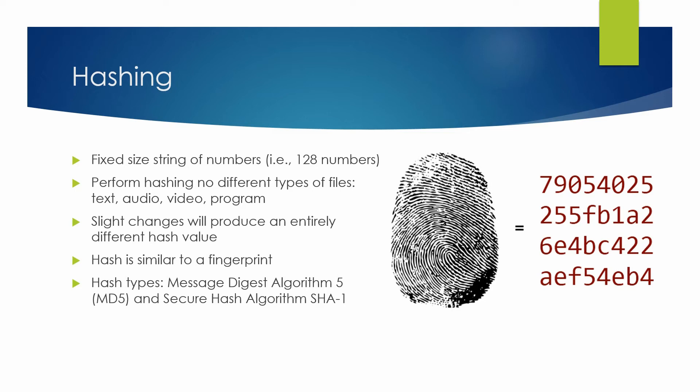You've probably seen a hash value when you downloaded a piece of software on the internet. Software producers post hash values so that users can verify the integrity of their software. For example, after you download a piece of software, you can calculate its hash value. If this hash value matches the value on the website, then you know it's not been tampered with. If it does not match, then you know you shouldn't download it.